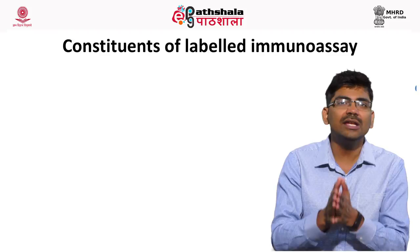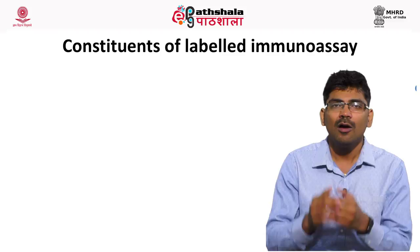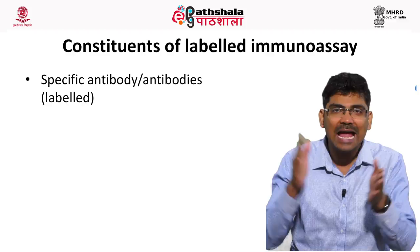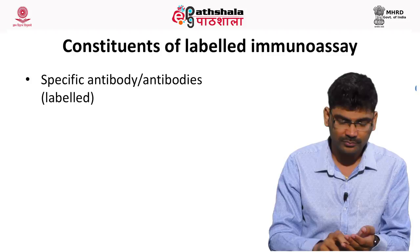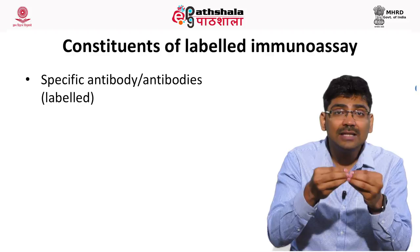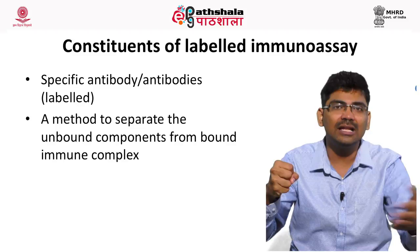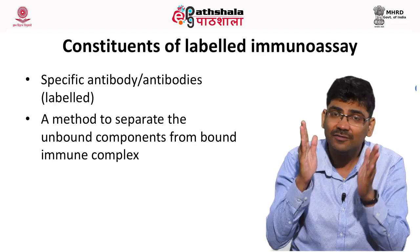The components of immunoassay are common to all four types. All you need is antibodies, because immunoassay is an antigen-antibody reaction. The antibody can be only one or more than one, depending upon the type of immunoassay. There should be a system to separate the antigen-antibody complex from the unreacted antigen and antibodies — that is very important for any immunoassay.